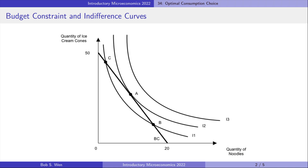The indifference curve I3 represents an even higher preference, but all the points on I3 are outside the budget line and therefore are not affordable. Thus, combining the budget line with the indifference curves, we find that point A is the consumer's optimal consumption choice. It is affordable because it is on the budget line. It maximises the consumer's utility because it is on the highest possible indifference curve.